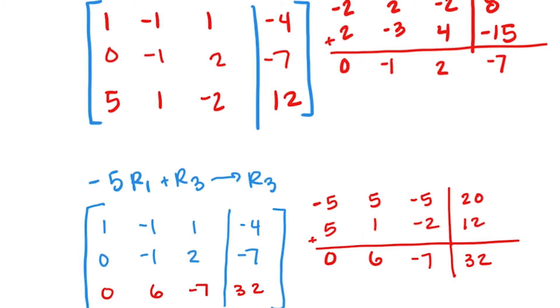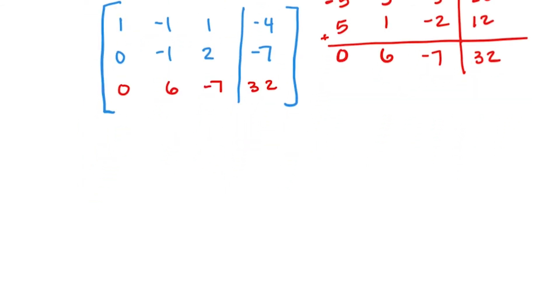Alright, so the first column is done. The next thing we want to do is make this middle number a positive 1, which is fairly easy, because we can multiply or divide rows by a constant. So if I were to just multiply this second row by a negative 1, that would go to a positive 1. So I'm just going to multiply the second row by a negative to change that second row. So we have 1, -1, 1, -4 in the top. Row 3 is not changing. And then the second row we just multiply by a negative, so it's 0, positive 1, -2, positive 7.